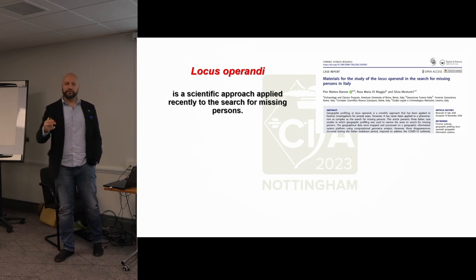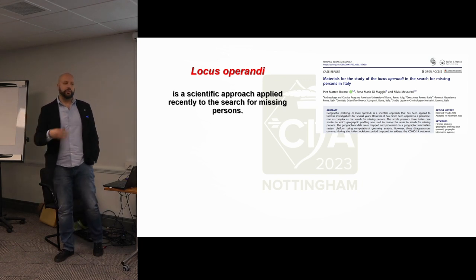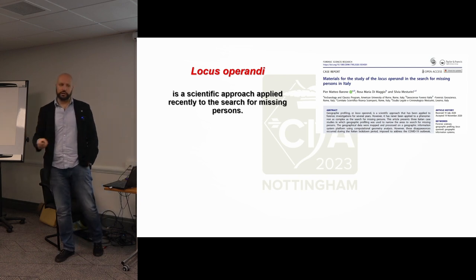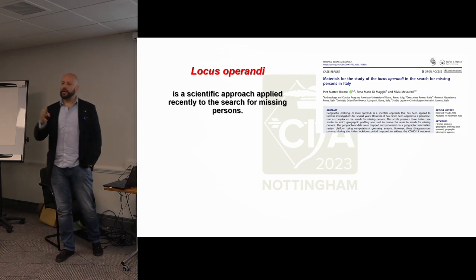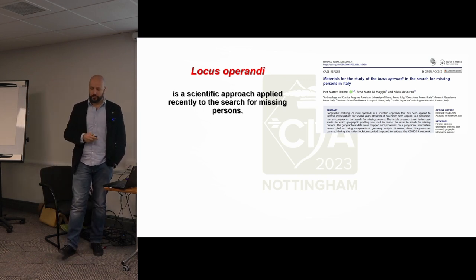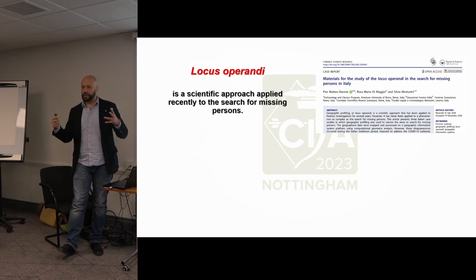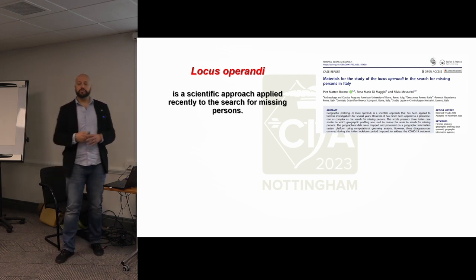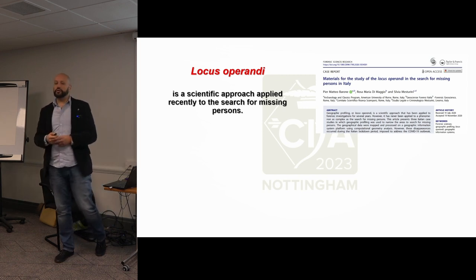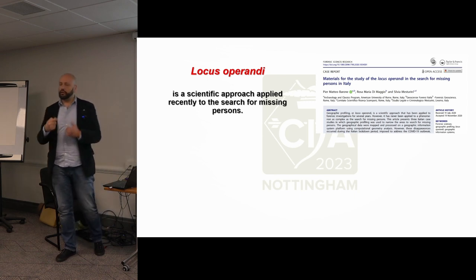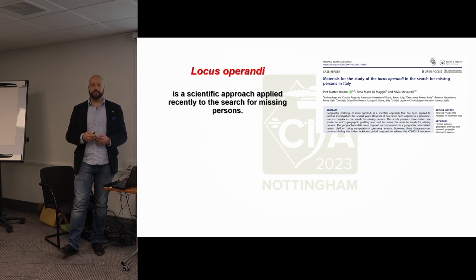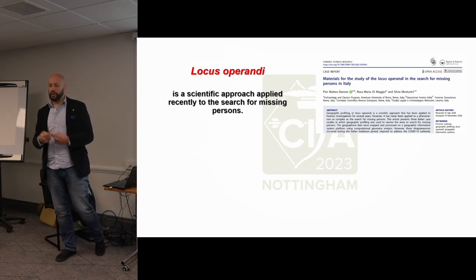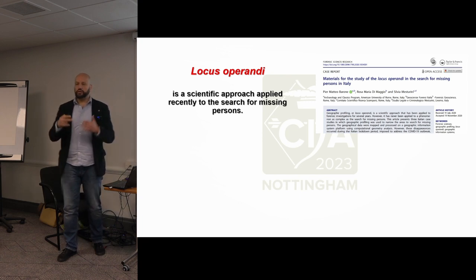In different specific scenarios, you can use different kinds of tools thanks to advancements in technology and artificial intelligence — all these sources can help with narrowing down the search area. One of these methods is called locus operandi. It's similar to the modus operandi concept but more related to the missing person — specifically the activity of the missing person before their disappearance. Like the equations used for serial killers, the same kind of equation can be applied to a missing person to narrow down the search area.